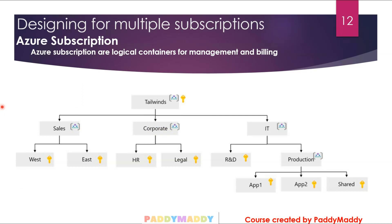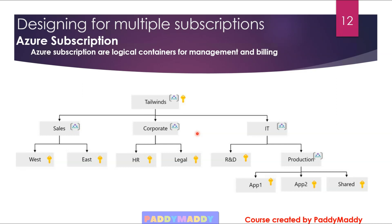Also consider making subscription owners aware of their roles and responsibilities. You could conduct an access review using Azure AD Privileged Identity Management (PIM) quarterly or twice a year — these access reviews ensure privileges don't proliferate as users move within the organization from one division to another with different roles and responsibilities.